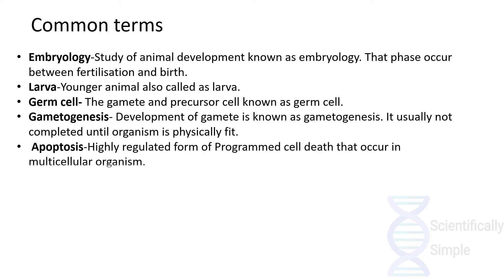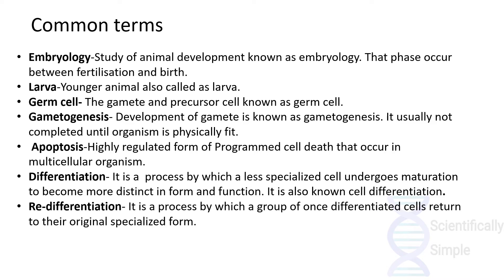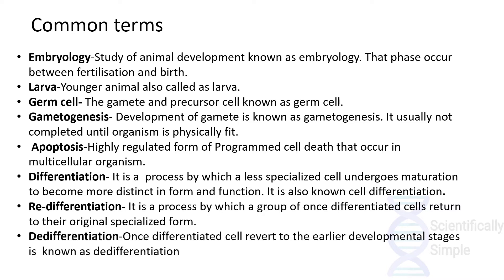Apoptosis is a highly regulated form of programmed cell death that occurs in multicellular organisms. Differentiation is the process by which less specialized cells undergo maturation to form more distinct cells with a specific function. Redifferentiation is a process by which previously differentiated cells return back to the original specialized form. Dedifferentiation is when differentiated cells revert to earlier developmental stages.